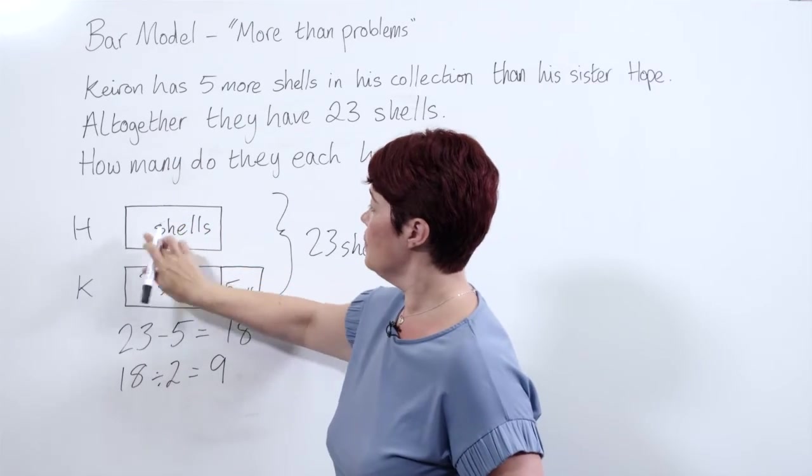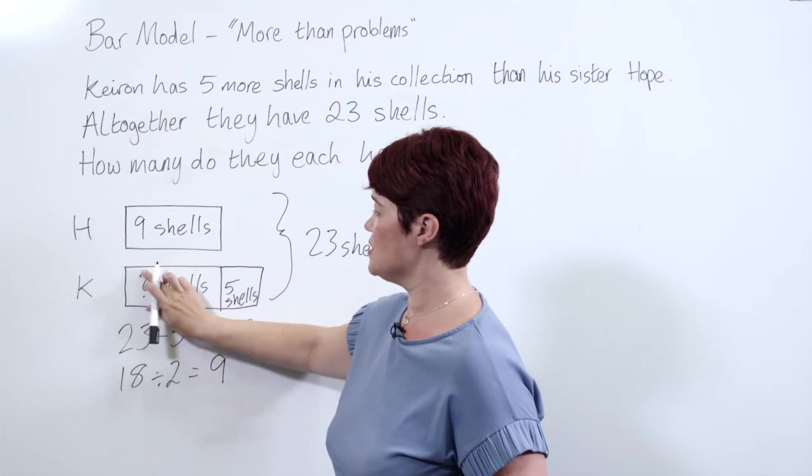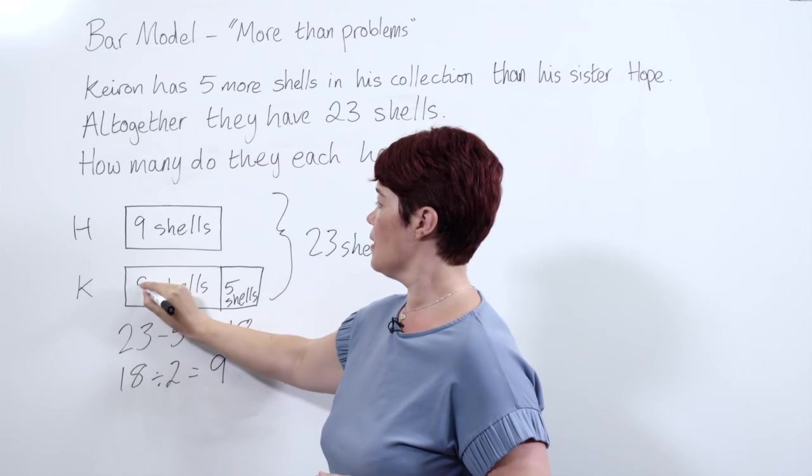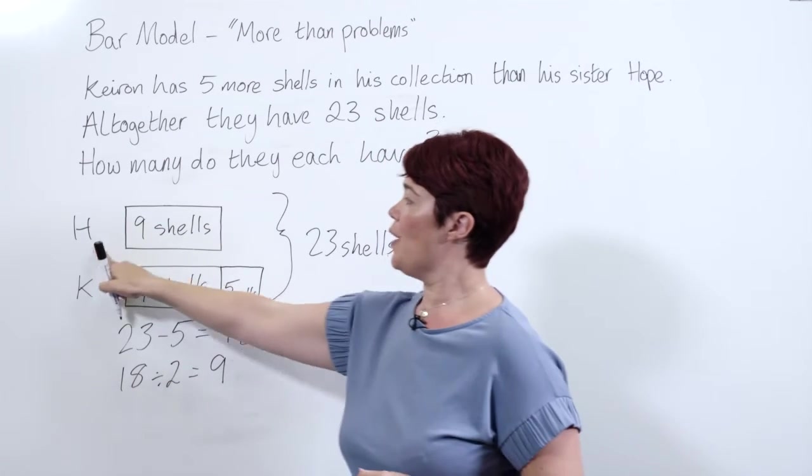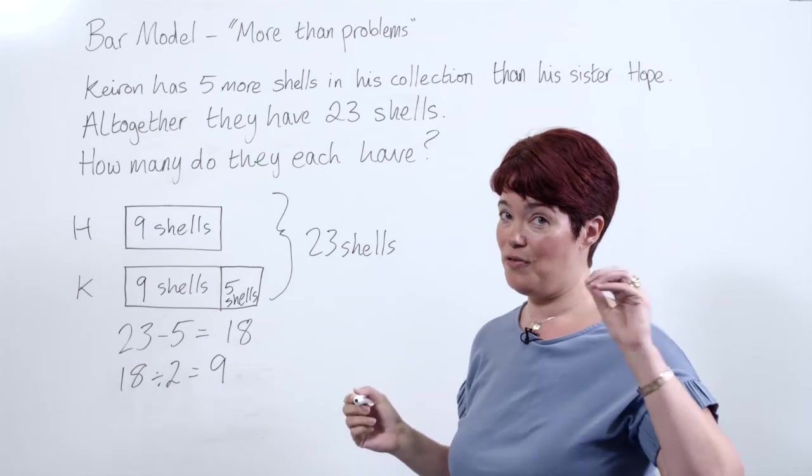Going back to our model we can replace our unknown, our question mark with 9. We now know Hope has 9 shells, we can read that off straight away.